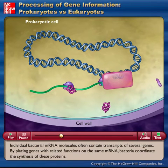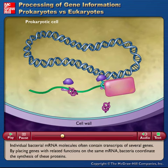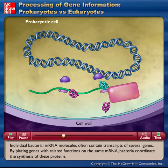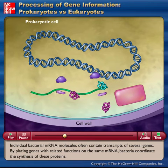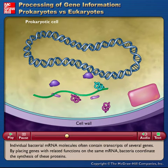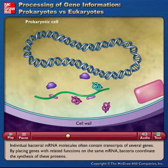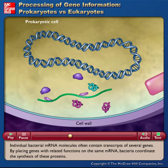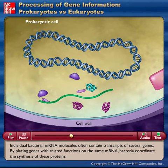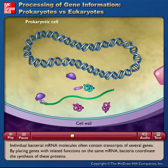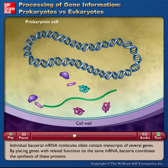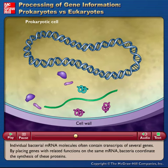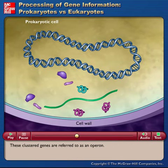Individual bacterial mRNA molecules often contain transcripts of several genes. By placing genes with related functions on the same mRNA, bacteria coordinate the synthesis of these proteins. These clustered genes are referred to as an operon.